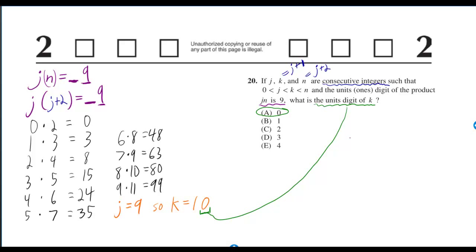If j, k and n are consecutive integers such that 0 is less than j is less than k is less than n, and the units one's digit of the product jn is 9, what is the unit's digit of k?